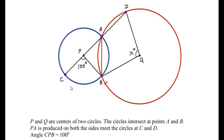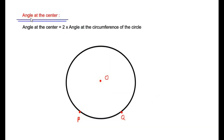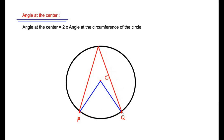We use the angle-at-the-center theorem, which states that the angle at the center is two times the angle at the circumference of the circle. For a circle with center O and two points P and Q on it, joining them to the center forms a central angle at O. The same two points make an angle at the circumference at a point R. So angle POQ equals two times angle PRQ.